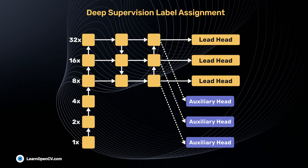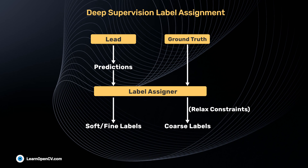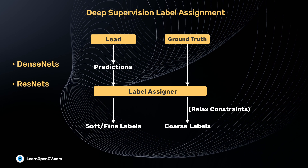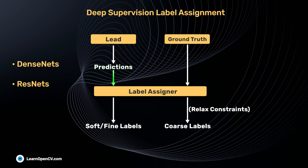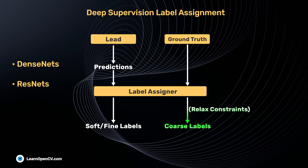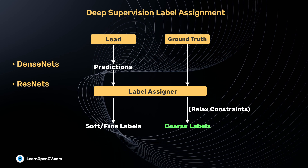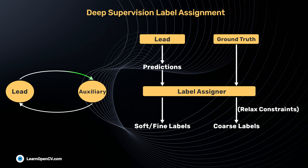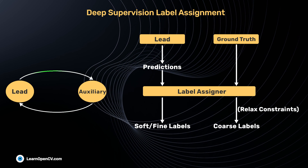Significant improvement in convergence is seen with the inclusion of deep supervision in dense nets and res nets, which usually converge well. The lead head generates fine labels, and when we relax the constraint of these labels, we get coarse labels from the label assigner. The lead head guides the auxiliary head, which in turn helps the lead head learn better information.